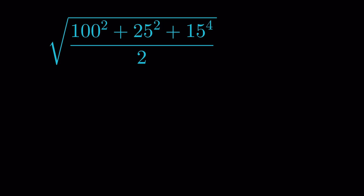We need to solve: the square root of (100 squared plus 25 squared plus 15 to the power 4, divided by 2), without using a calculator. Let's try.